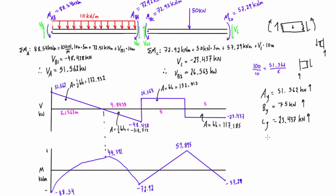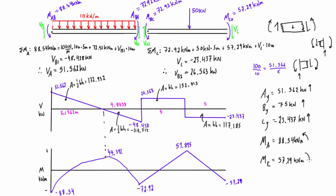For moment reactions: at A, the internal moment was negative 88.54 kN·m, oriented counterclockwise internally, so the reaction moment is equal and opposite — 88.54 kilonewton meters counterclockwise. At C, the internal moment was also negative at 57.29 kN·m, so the reaction moment is 57.29 kilonewton meters in the opposite direction.